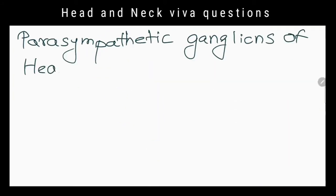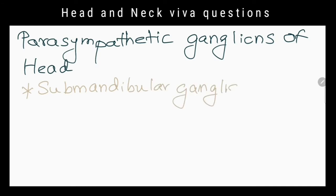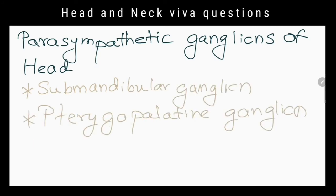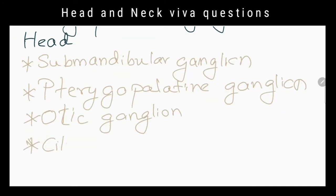What are the other parasympathetic ganglia located in the head? Pterygopalatine ganglion, otic ganglion and ciliary ganglion.